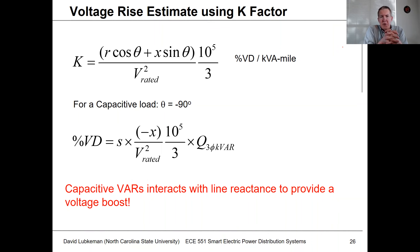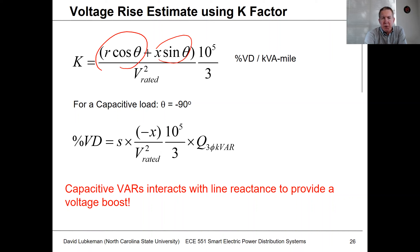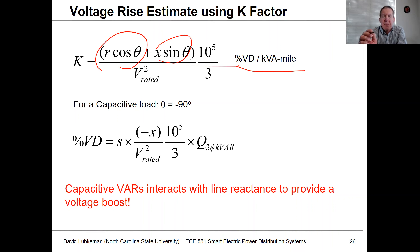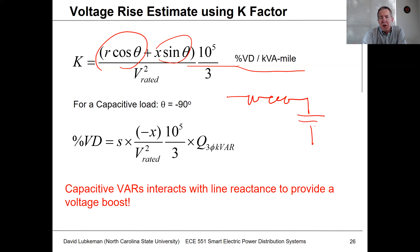Now let's take a look at how we can compute the voltage rise using the k-factor approach. As you recall, the k-factor had two different parts to it — a real part due to resistance and a reactive part due to reactance. It's a function of the power factor angle, in units of percent voltage drop per kVA mile. If I had a load on this line segment that was capacitive in nature, it would look from the sake of voltage drop calculations like a load with a power factor angle of minus 90 degrees.